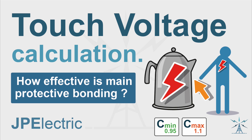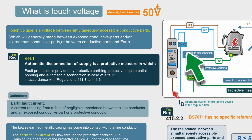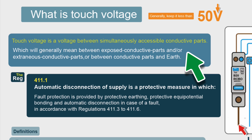Today we're going to look at touch voltage. We've got quite a lot to cover: how to calculate touch voltage and fault current, the voltage factors C max and C min, the voltage which will actually appear at the fault, and touch voltage for an installation with and without protective bonding and with supplementary protective bonding. Touch voltage is the voltage that will appear between simultaneously accessible conductive parts during a fault — between exposed and extraneous conductive parts, or between a conductive part and earth.